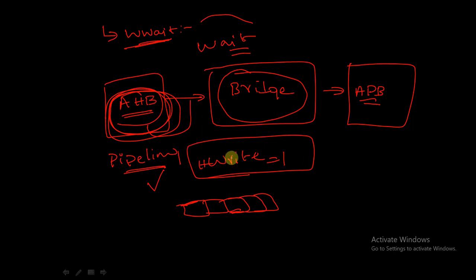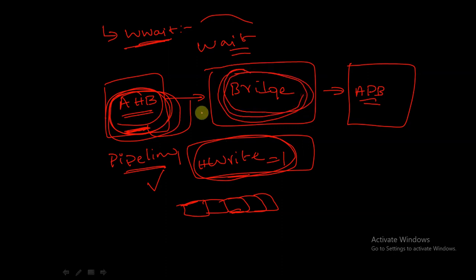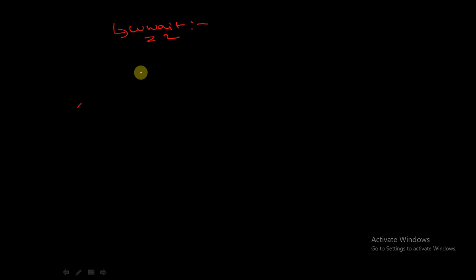That's why we are introducing the WWRITE state - to introduce some clock cycle delay until the AHB side completes its writing. The bridge will wait for some clock cycles until AHB completes its write operation. The APB write transfer is then started in the next clock cycle after the WWRITE state.